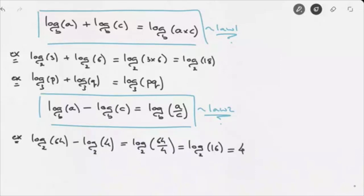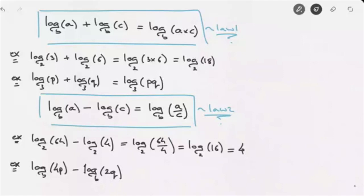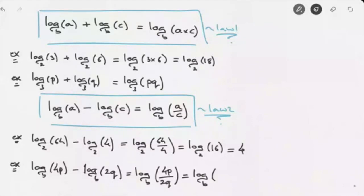Or we may be asked to simplify log base B of 4P minus log base B of 2Q. Using this law, we can state that this equals log base B of 4P over 2Q. We can simplify the 4 on the numerator with the 2 on the denominator to write that this equals log base B of 2P over Q.